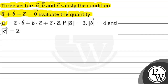Evaluate the quantity nu, which is equal to vector a dot vector b plus vector b dot vector c plus vector c dot vector a, given that mod a is equal to 3, mod b is equal to 4, and mod c is equal to 2.